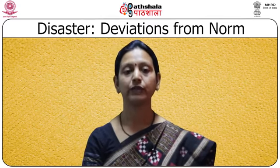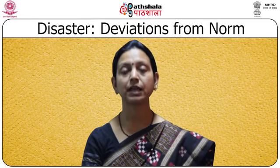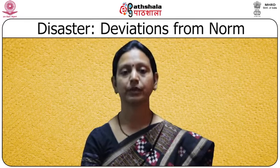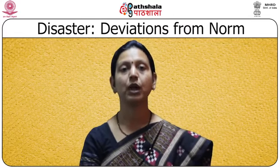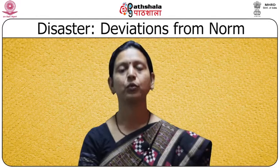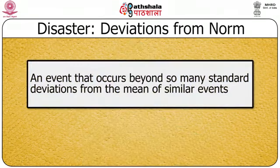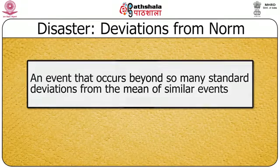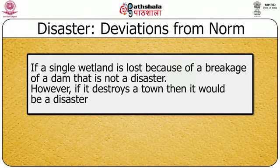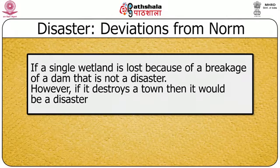According to Valero and Letcher (2013), a disaster varies from norm — it is not only abnormal but also outside expectations. A disaster is an event that occurs beyond so many standard deviations from the mean of similar events. For example, if a single wetland is lost because of a breakage of a dam, this is not a disaster. If it destroys a town, then it would be a disaster.